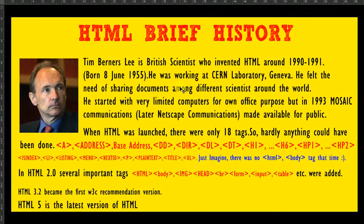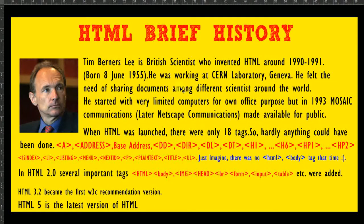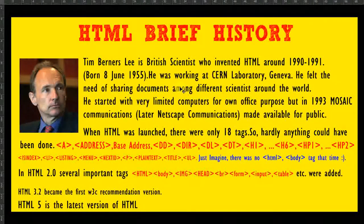In HTML 2.0, several important tags were added such as HTML, body, IMG, head, BR, form, input, table, and others. HTML 3.2 became the first W3C recommendation version.